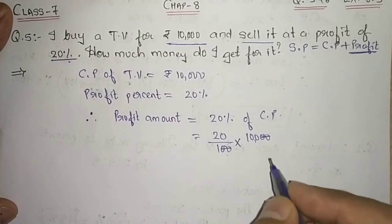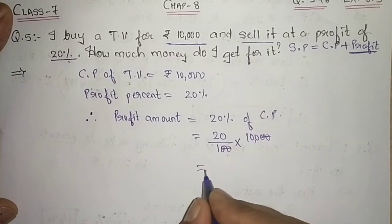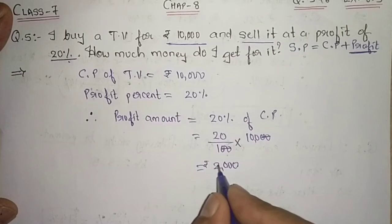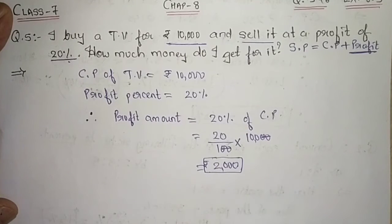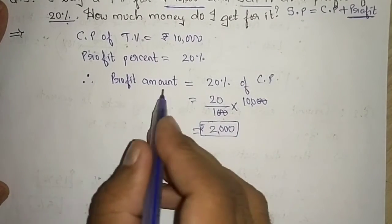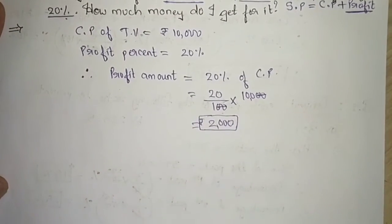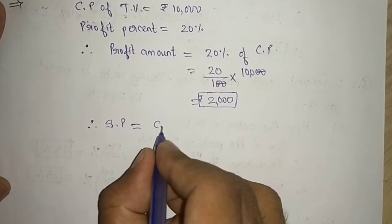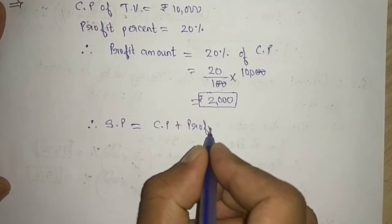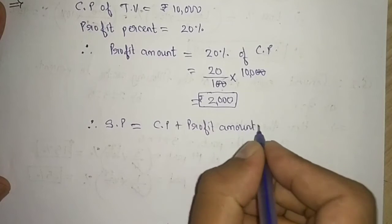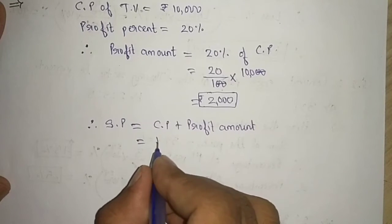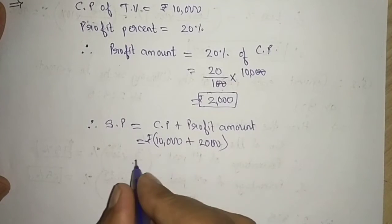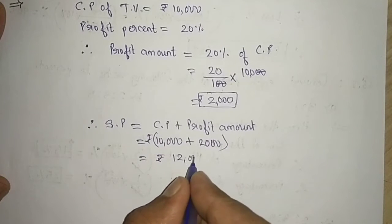Two zeros cancel out — 100 into 2 gives 200, plus one zero of 20, so my profit amount is rupees 2,000. Now since I have the profit amount, I can find the selling price. Therefore SP equals cost price plus profit amount, which equals 10,000 plus 2,000, which is rupees 12,000.